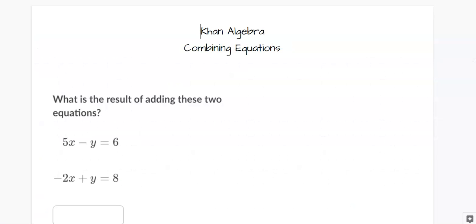So when you're combining equations, you're basically just stacking them up and adding them like normal numbers. So it says, what is the result of adding these two equations? So I'm just going to add the x terms, the y terms, and the constants at the end.